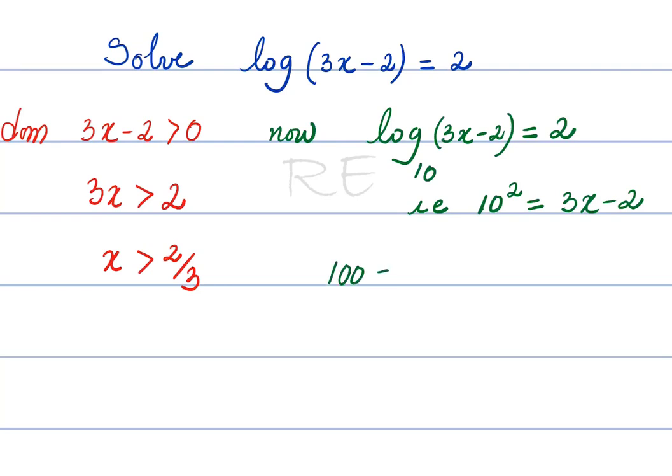10 to the power of 2 is 100. So 100 is equal to 3x minus 2. Therefore, 3x when we add 2 to both sides is equal to 102.